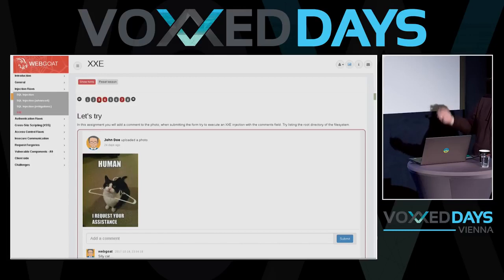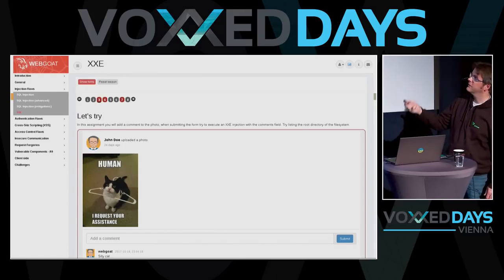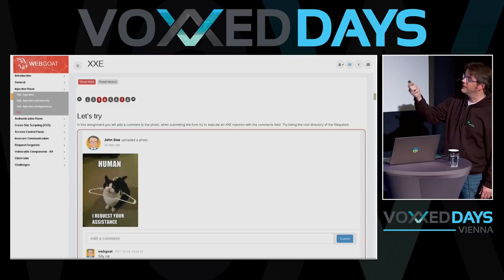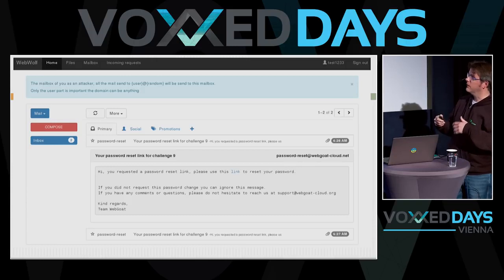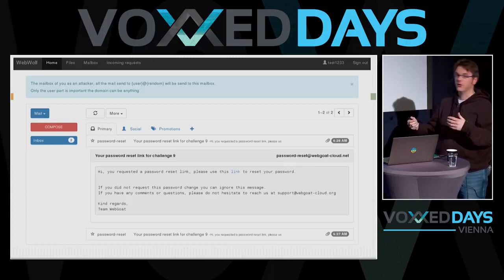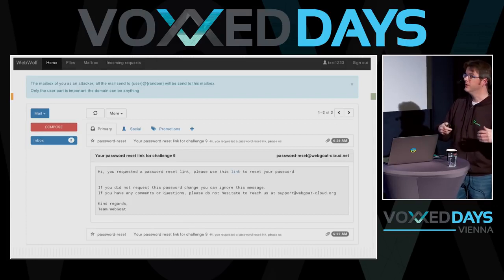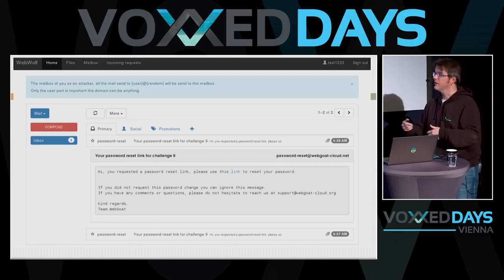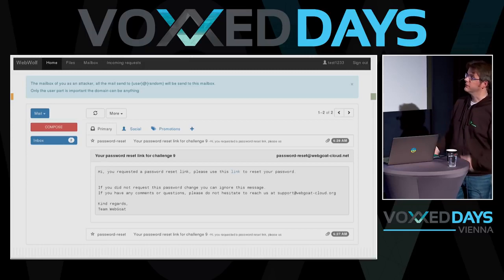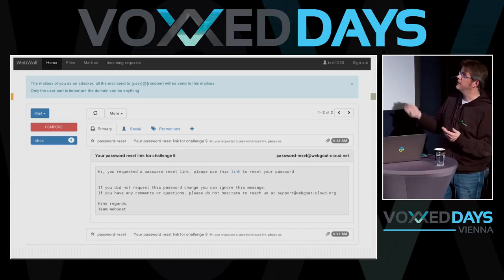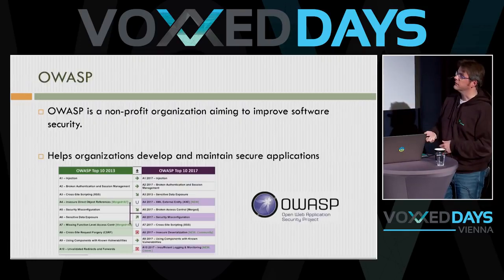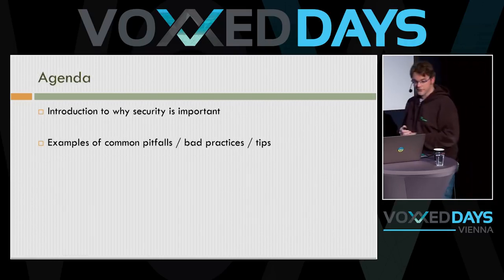Here's how it looks — this is an assignment for an XXE XML external entity attack and you have to try to make it work. We also made it more realistic in the current version. We also made WebWolf, which is more from the attacker's point of view, so you also learn what the attacker needs to do on the other side. Here you see a password reset lesson where the attacker has the ability to get an email and click that link to solve the lesson.